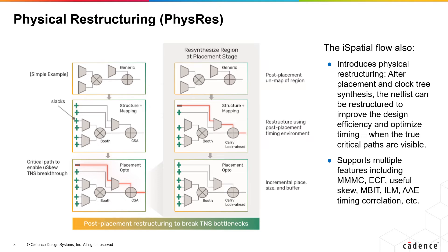Early in the design flow, synthesis has access to power techniques like mapping and architecture selection to trade off between timing, area, and power. However, the accuracy of the final placement, routing, and timing is poor. Late in the design cycle, accuracy is high but timing closure techniques are limited to placement, routing, and cell sizing.